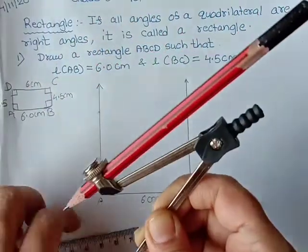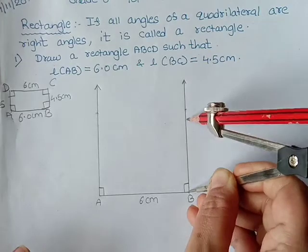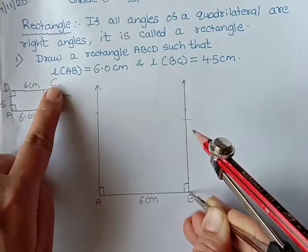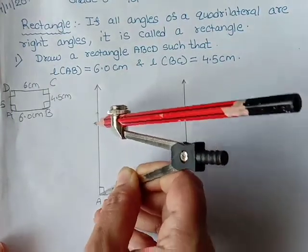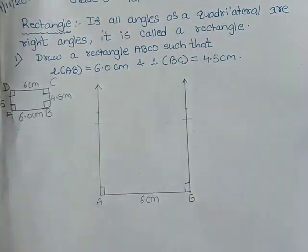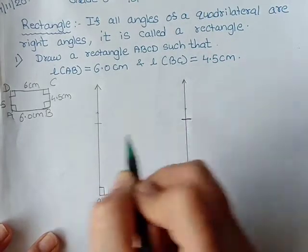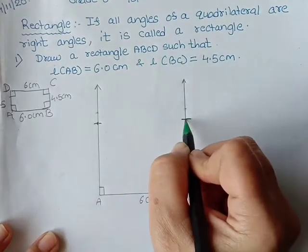Here we go, this is 4.5. Now see what I am doing. I am keeping at B and giving an arc. So where it is cutting this point, this point is going to be your C point. And from here also I am going to give a cut. Let me make this cut a little darker for you. So it is this arc.